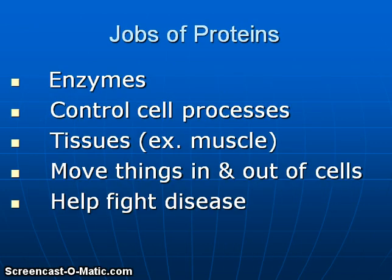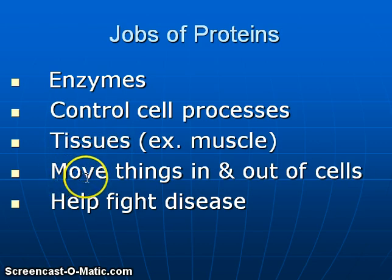Proteins perform many important functions within our bodies. Many proteins are enzymes which help to allow chemical reactions to occur within our cells. Other proteins have the job of controlling cell processes. Other proteins make up important tissues, for example muscle. There are proteins responsible for moving things in or out of our cells to maintain homeostasis, and other proteins help fight disease — for example, the antibodies our bodies form when exposed to a pathogen. The best estimate is that our bodies have approximately 100,000 different kinds of proteins.